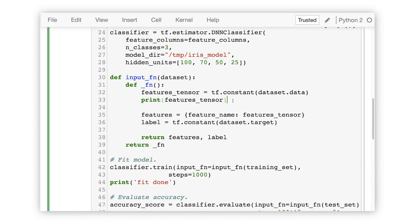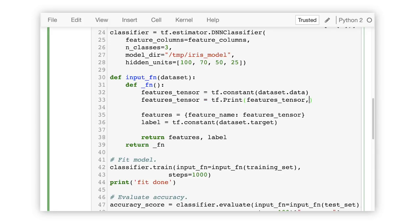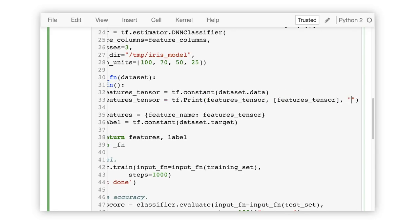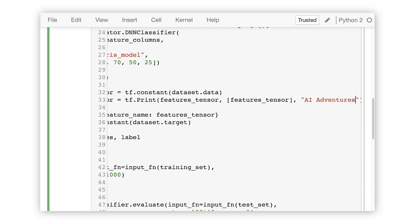So instead, we'll introduce the tf.print call into the input function's data pipeline. Notice that we are just printing the same value that we passed in as the input, but you could certainly print other nodes in this array as well.